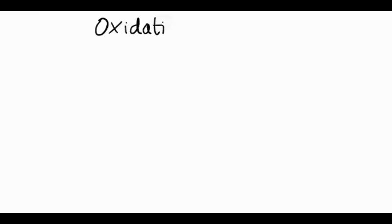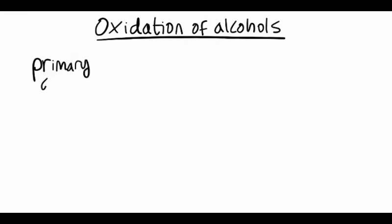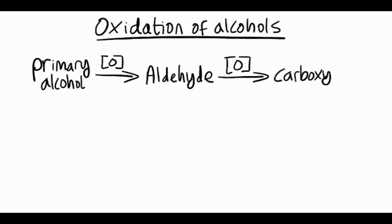So let's look at the oxidation of alcohols using some examples. Remember, a primary alcohol can be oxidized using acidified potassium dichromate to an aldehyde, which can be further oxidized to a carboxylic acid.